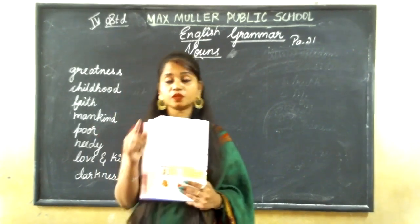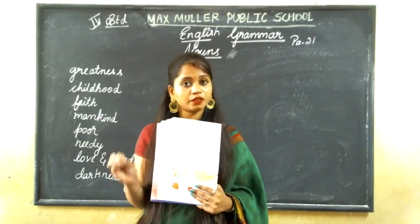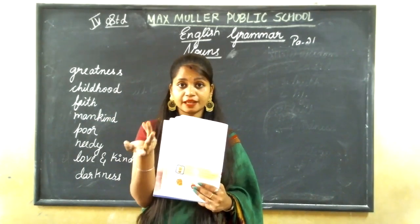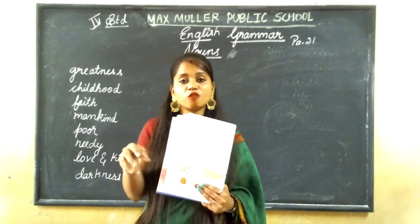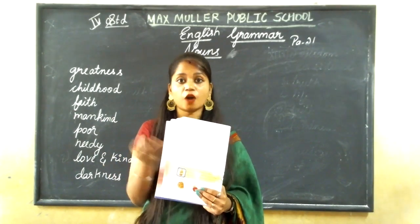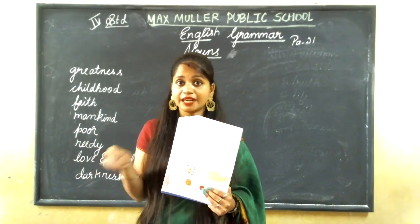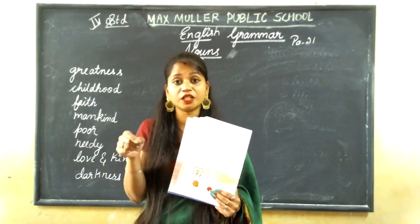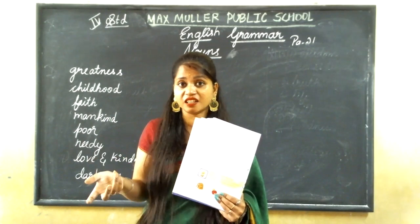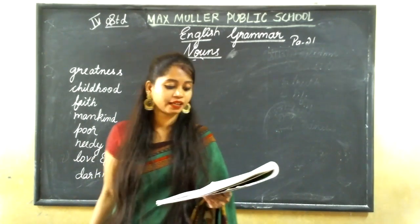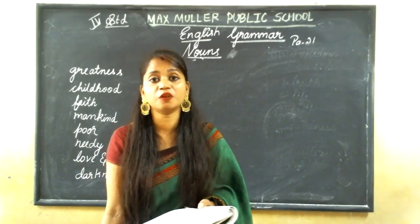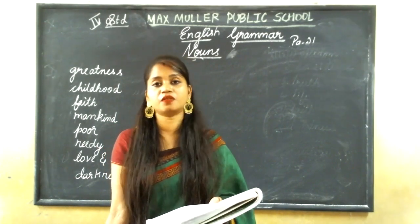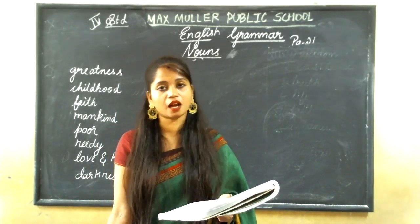To summarize: countable means nouns we can count; uncountable means we cannot count. 'How many' goes with countable; 'how much' goes with uncountable. For example: how much rice, how much water, how much oil — because these are uncountable. Common nouns and collective nouns are countable; material nouns and abstract nouns are uncountable.